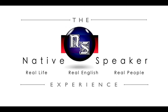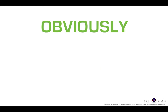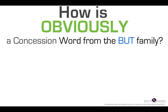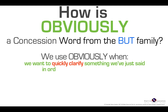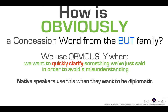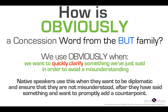Welcome back to Native Speaker. We're going to continue looking at the 'but family' and the concession cousins. In this lesson we're going to look at 'obviously.' How is 'obviously' a concession word from the but family? Well, we use obviously when we want to quickly clarify something we've just said in order to avoid a misunderstanding. Native speakers use this when they want to be diplomatic and ensure they are not misunderstood, after they have said something and want to promptly add a counterpoint.